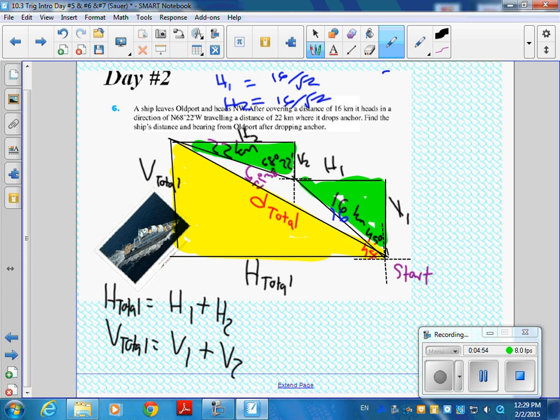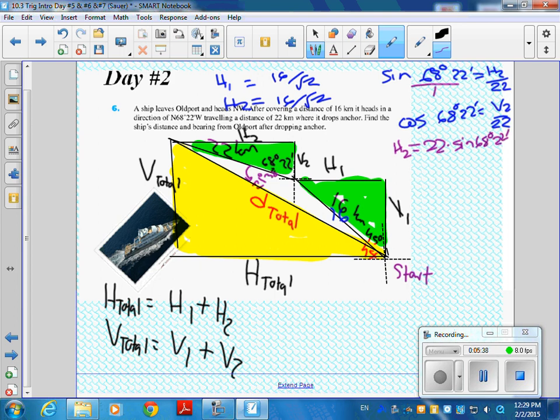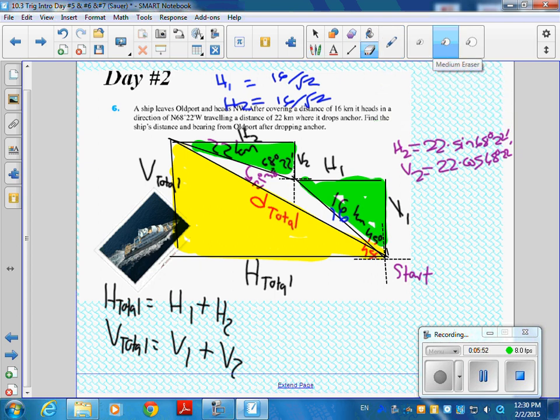I'm going to take the sine of 68 degrees and 22 minutes. And what is the sine of 68 degrees and 22 minutes? H2 over 22. And then the cosine of 68 degrees and 22 minutes is the adjacent V2 over 22. Why did I do that? Well, I did that because now I can solve for H2 and get H2 is 22 times the sine of 68 degrees, 22 minutes. And V2 is going to be 22 times the cosine of 68 degrees, 22 minutes. Get this out of the way. And we need some decimals here. So to do that, grab your calculators. I'll race you. See who can get calculators out faster.